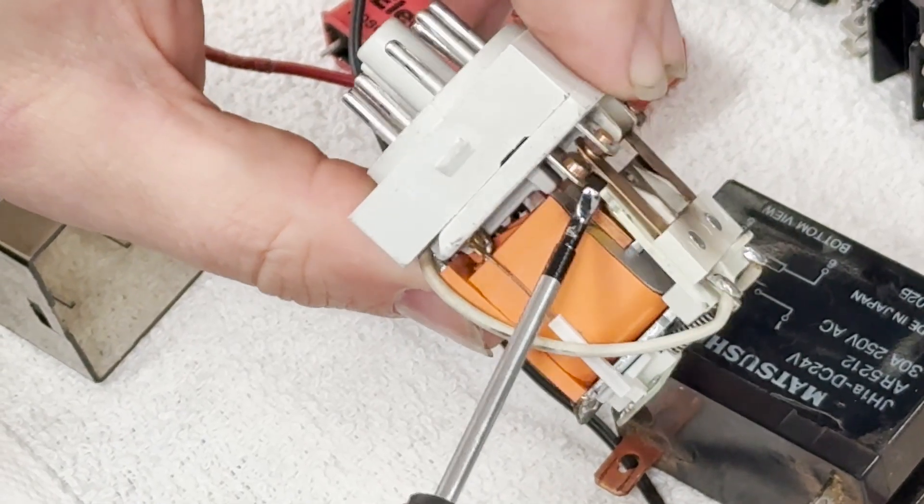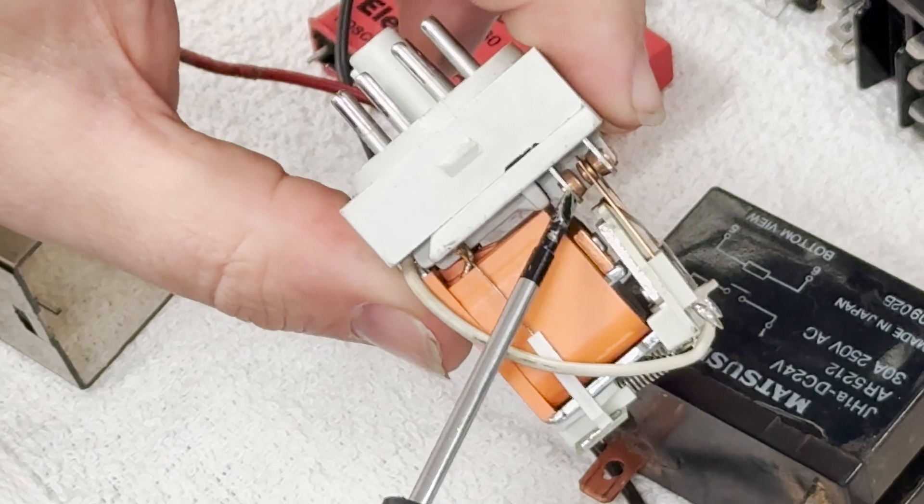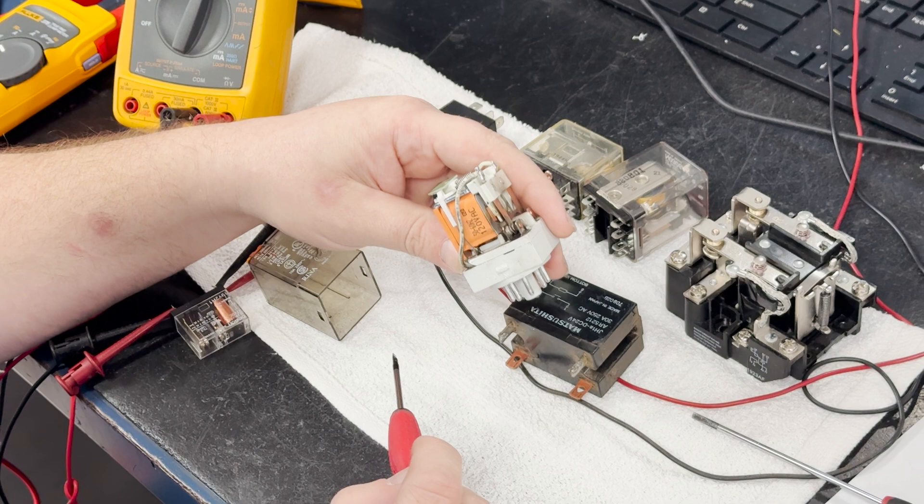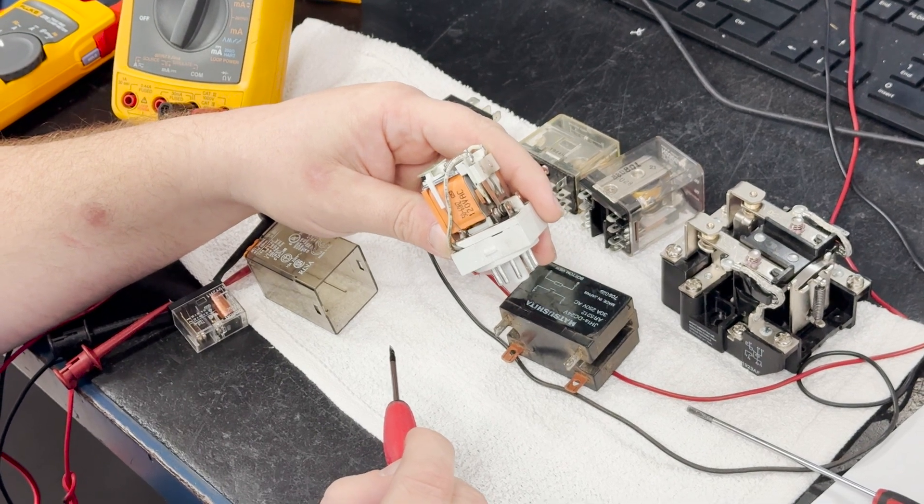So likely this side of the relay is okay and then this side of the relay is what has failed. So this is a good example of the type of common failure that relays undergo after years of use in normal wear and tear.